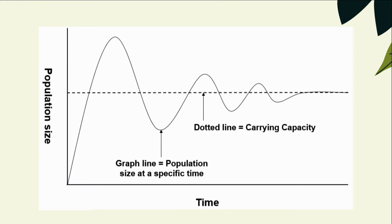It's important to note that no population or habitat is perfect, and sometimes the population will go above or below the carrying capacity. In this graph, the solid line represents population size at a specific point in time, and the dotted line running horizontally represents the carrying capacity. When the graph line is below the carrying capacity, there is room for the population to increase. However, once it gets above the carrying capacity, the population will start decreasing drastically.